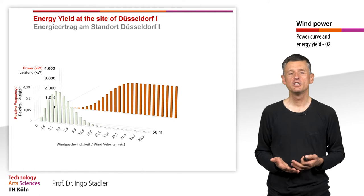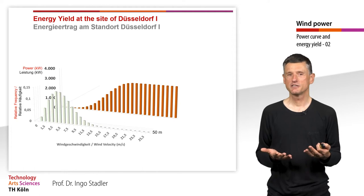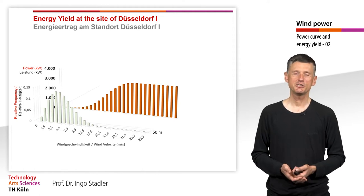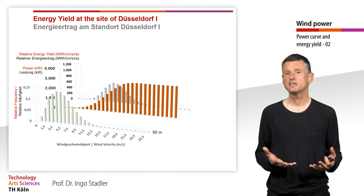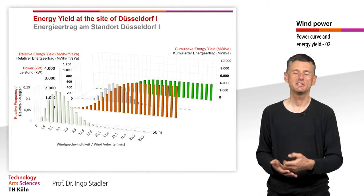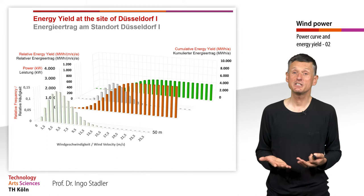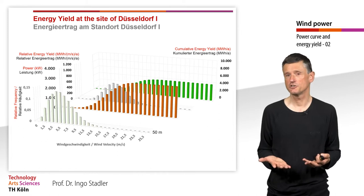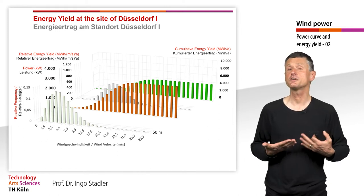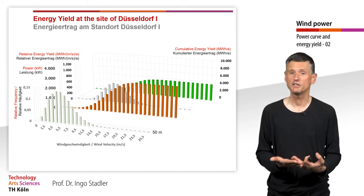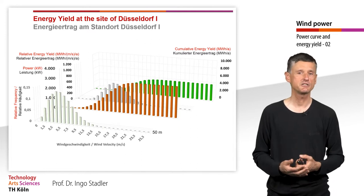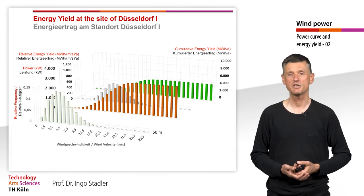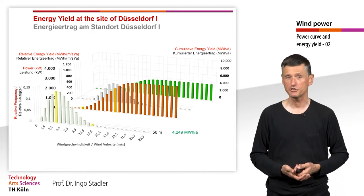For Düsseldorf we again calculate the relative energy yield and then the cumulative energy yield over the year. We already see the cumulative energy yield is significantly lower than at the coastline — it is only a bit more than 4,000 MWh per year.